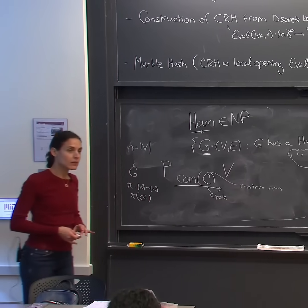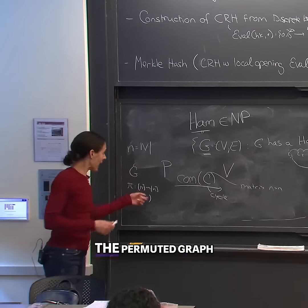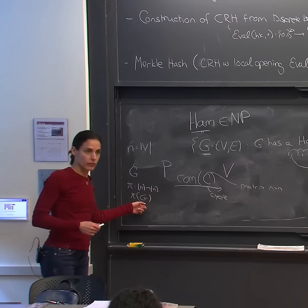Yeah? The cycle is on the label of the permuted graph, exactly, and the permuted graph, okay?